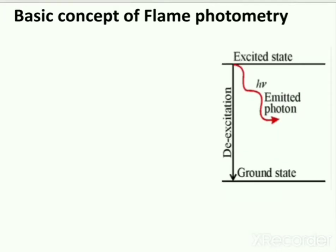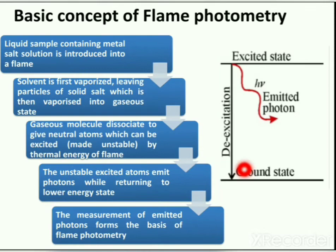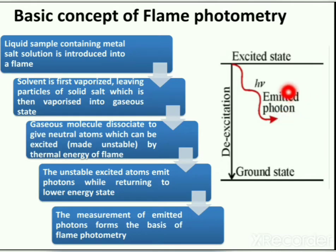The basic process of flame photometry is that when a liquid sample containing metal salt solution is introduced into a flame, the solvent is first vaporized, leaving particles of solid salt which are then vaporized into a gaseous state. Molecules in the gaseous state dissociate to give neutral atoms which can be excited by thermal energy of the flame. The unstable excited atoms emit photons while returning to a low energy state. Finally, the measurement of emitted photons forms the basis of flame photometry.